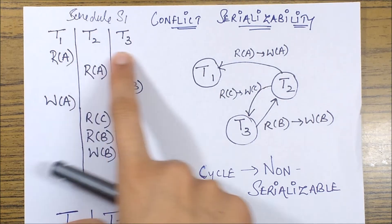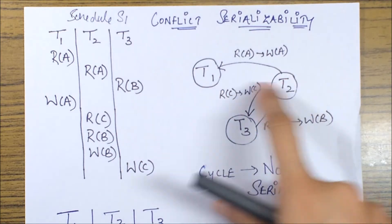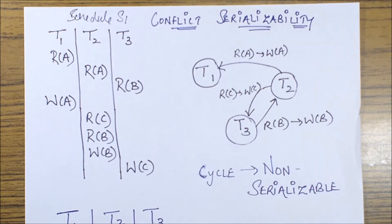Since we have three transactions over here T1, T2, T3, we'll mark three nodes T1, T2, T3 and next what I'm going to do is mark the conflict pairs as the edges.